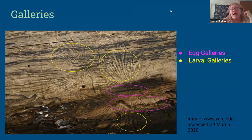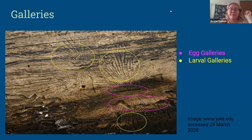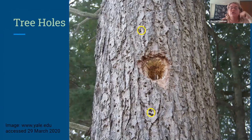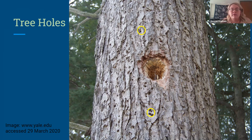Here's an actual picture of some galleries in a tree. The purple circles show egg galleries — note that they're uniform in width. The yellow circles represent larval galleries — note that they're at right angles and increase in size as I was mentioning. And these are the tree holes that the beetles leave when they exit to mate and find mates elsewhere. You can see them in the small yellow circles; they're all over the tree.